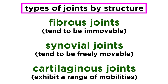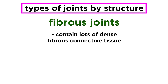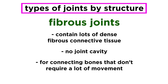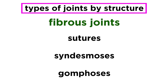Let's zoom in on each structural classification. With fibrous joints, there is a lot of dense fibrous connective tissue and no joint cavity to speak of. These joints are for connecting bones that don't require a lot of movement. There are three types of fibrous joints: sutures, syndesmoses, and gomphoses.